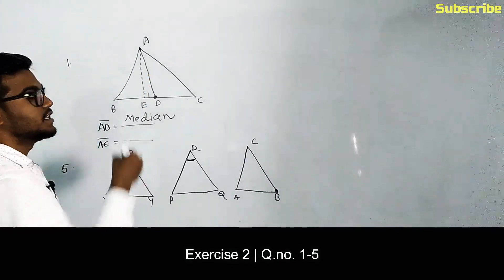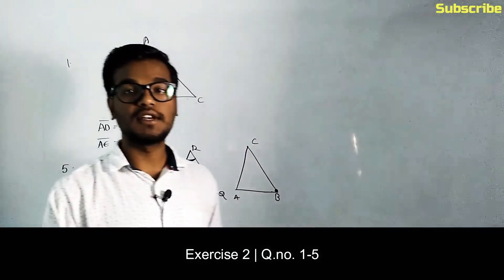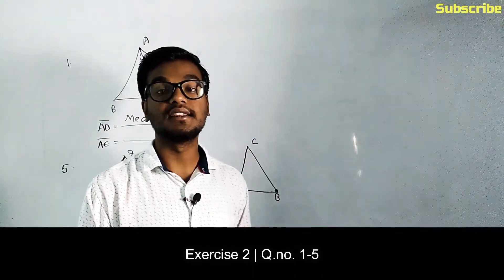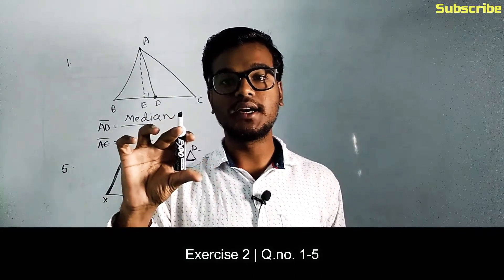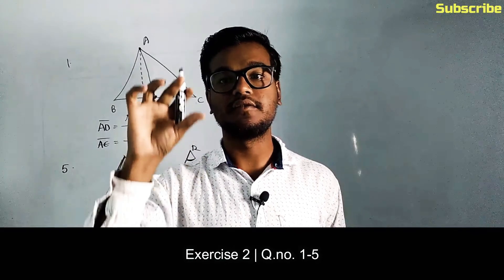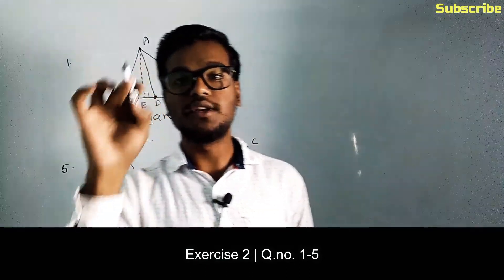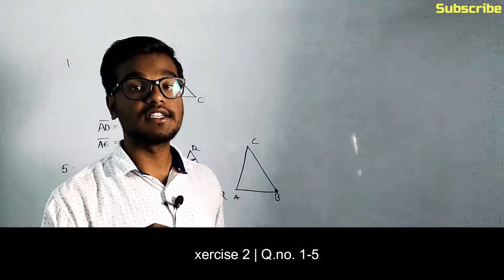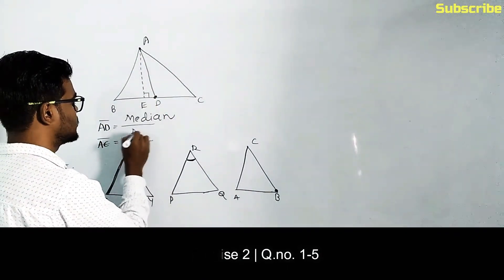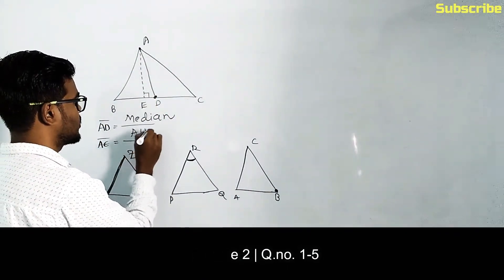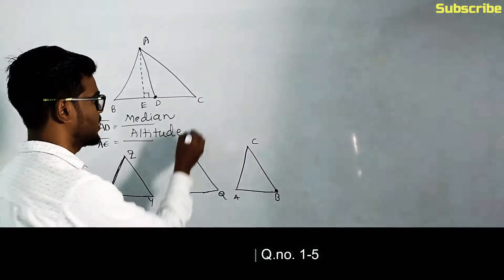What is AE? AE is the altitude — the height of the triangle. The altitude is the line which is perpendicular from a vertex down to the base, meeting it at 90 degrees. So AE is the altitude, which is the height of triangle ABC.